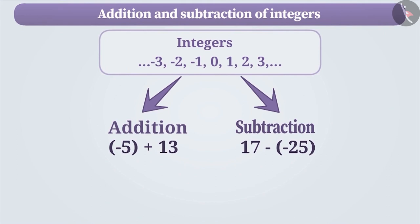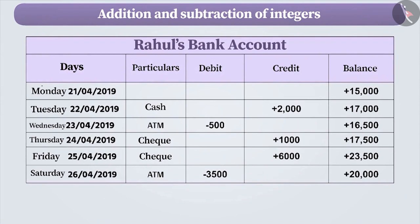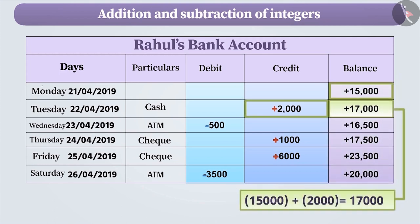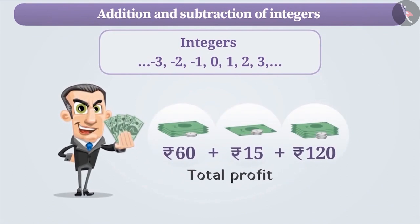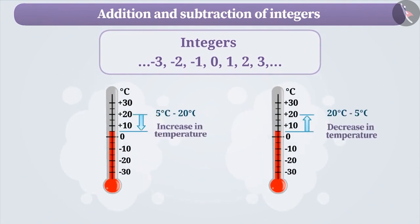For example, look at Rahul's bank account. Here, the amount credited is expressed with a positive sign and the amount debited is expressed with a negative sign. To find the balance, we need to add the balance amount with the debited or credited amount. In this way, addition and subtraction of integers can be used in many situations, like finding the total profit, recording the increase or decrease in temperature, etc.